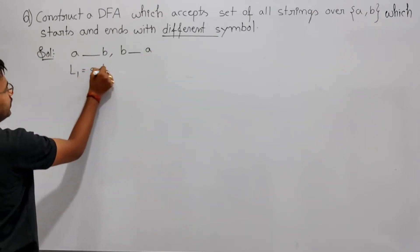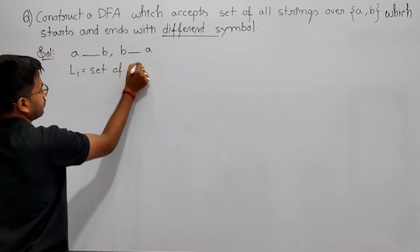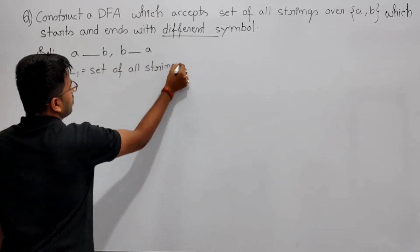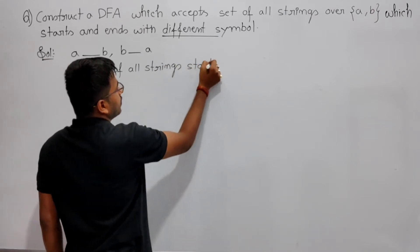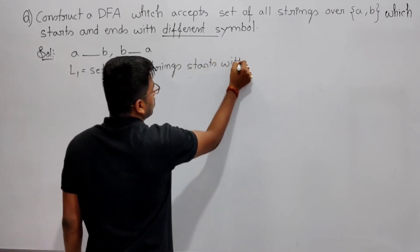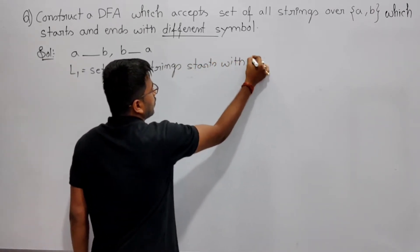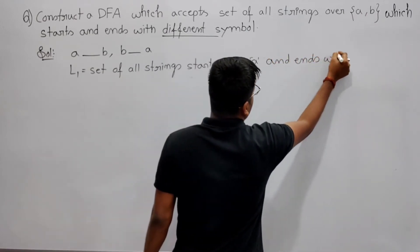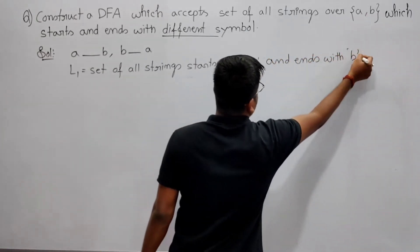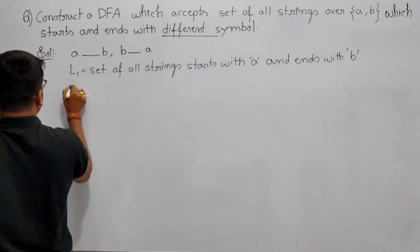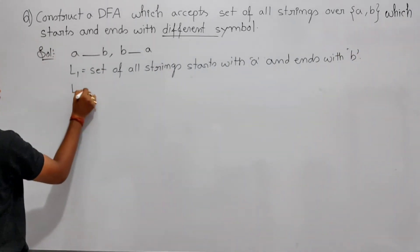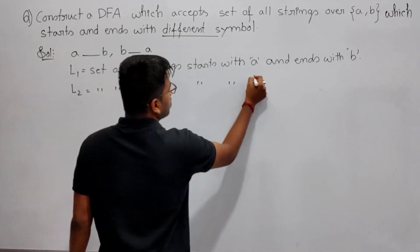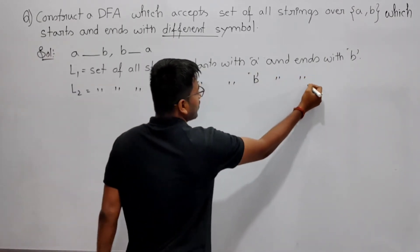L1 is the set of all strings that start with a and end with b. L2 is the set of all strings that start with b and end with a.